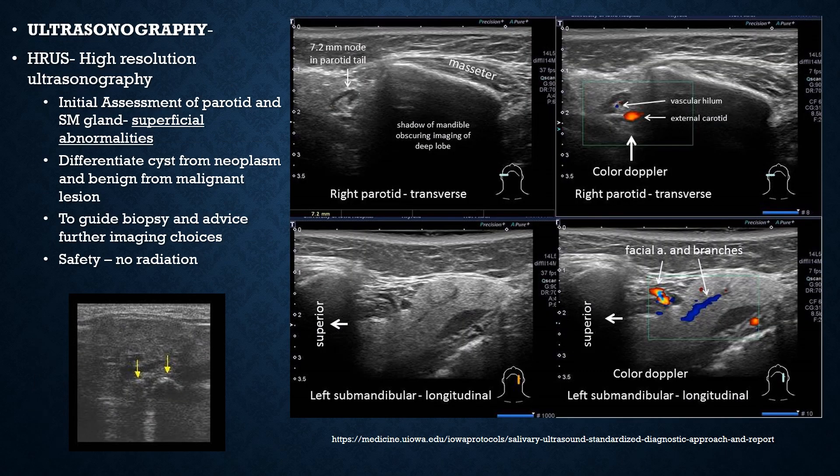High resolution ultrasonography is a very important method of imaging the salivary glands. Initial assessment of the parotid and submandibular salivary glands can be done with ultrasonography. It is useful for viewing superficial abnormalities, differentiating cysts from neoplasms, and distinguishing benign from malignant lesions. Ultrasonography is also used to guide biopsy and advise further imaging choices.